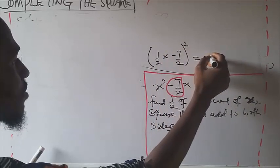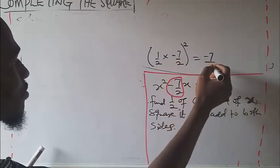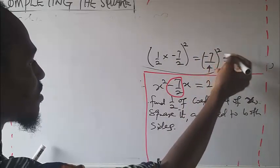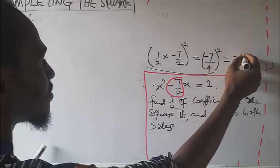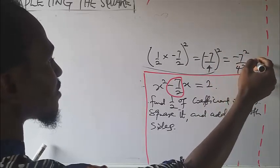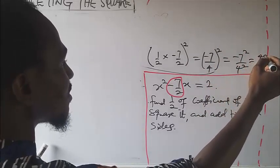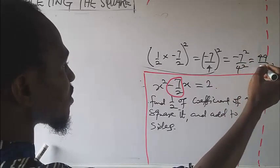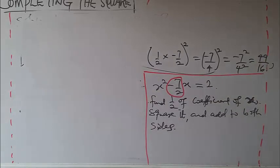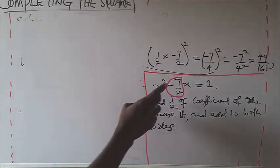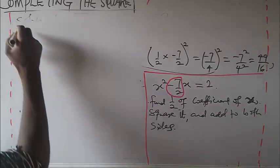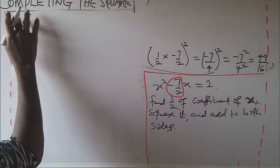Half of minus 7/2 is minus 7 over 4. Squaring that: minus 7 times minus 7 is 49, and 4 squared is 16, giving us 49/16. It means therefore that we add 49/16 to both sides of the equation.